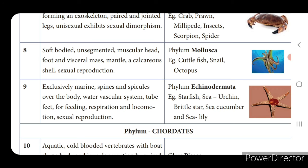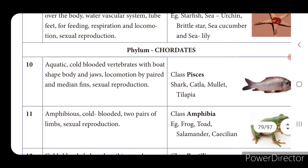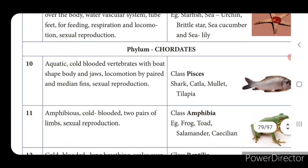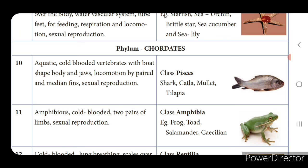All nine phyla are invertebrates. Now for vertebrates — phylum Chordata is classified into five classes. First, class Pisces — examples: shark, catla, mullet, tilapia. They are aquatic, cold-blooded vertebrates with a boat-shaped body and jaws. Locomotion is by paired and median fins. Reproduction is sexual.